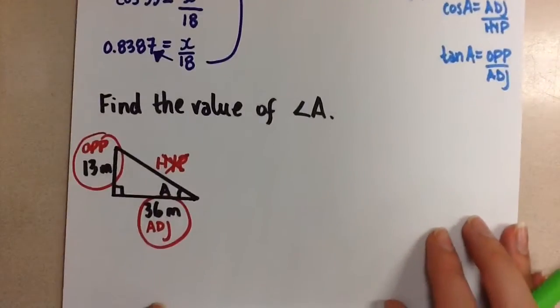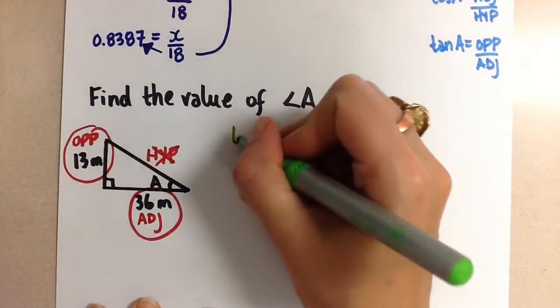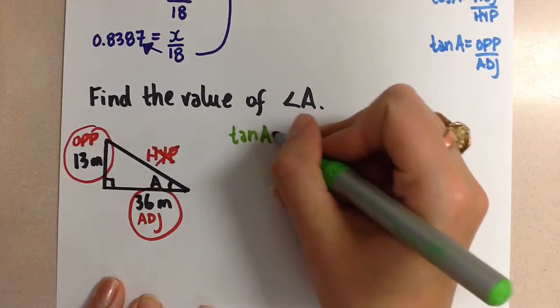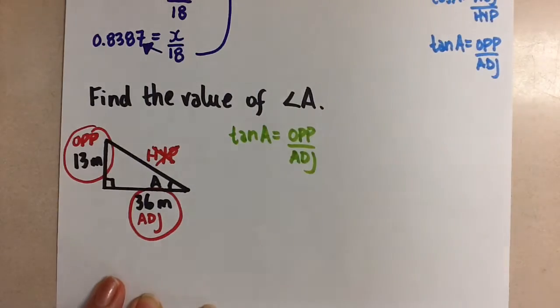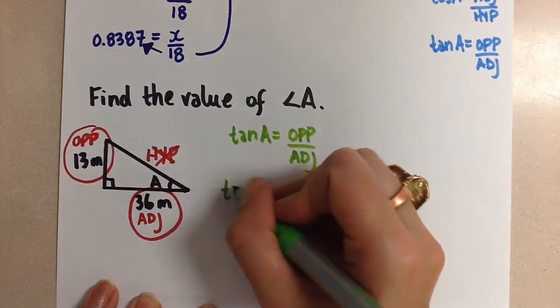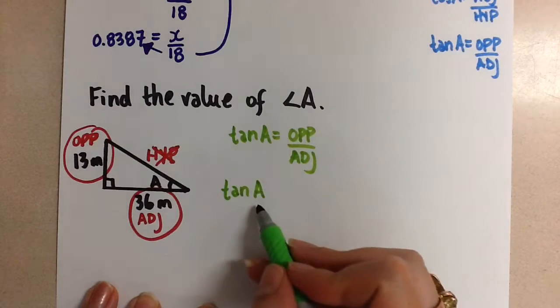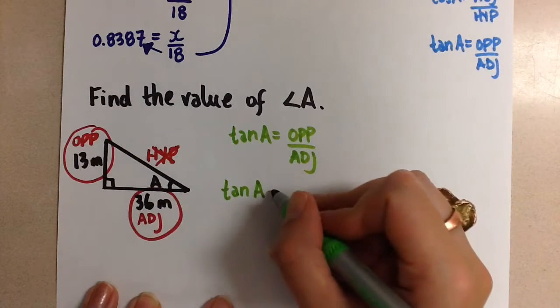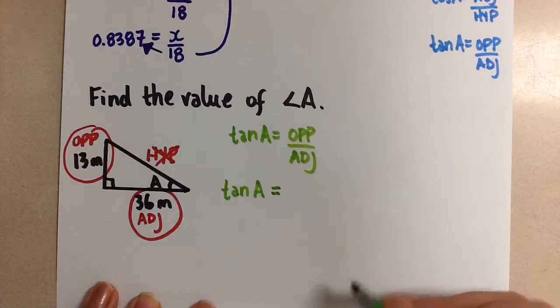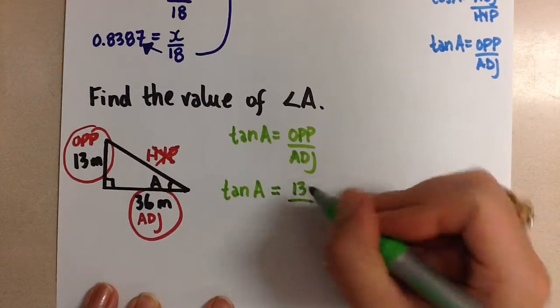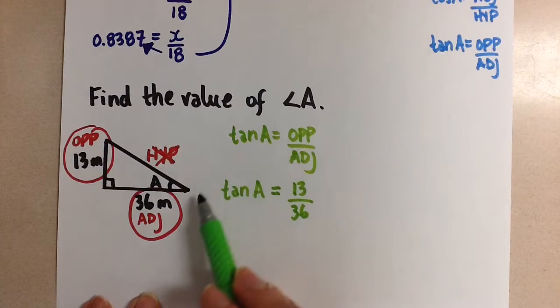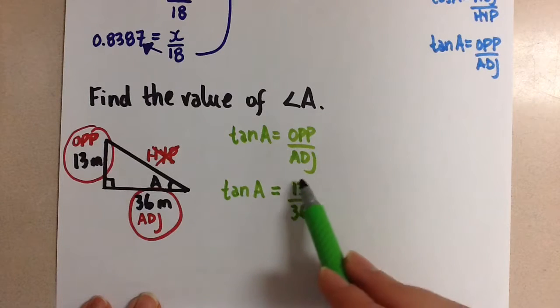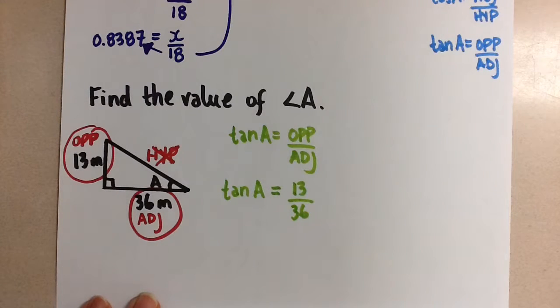So we start off with that formula. Tangent of an angle is equal to opposite over adjacent. Now this is our template that we need to follow to solve the problem. Let's rewrite the template with the values filled in. Tangent of the angle. Now I'm leaving A this time because we don't know what the value of the angle is. That's the unknown. Equals. Opposite side is 13 meters, and the adjacent side is 36 meters. Now let's look at what we can evaluate. We can't evaluate anything here because of the variable A, but on the right hand side we can evaluate 13 over 36.